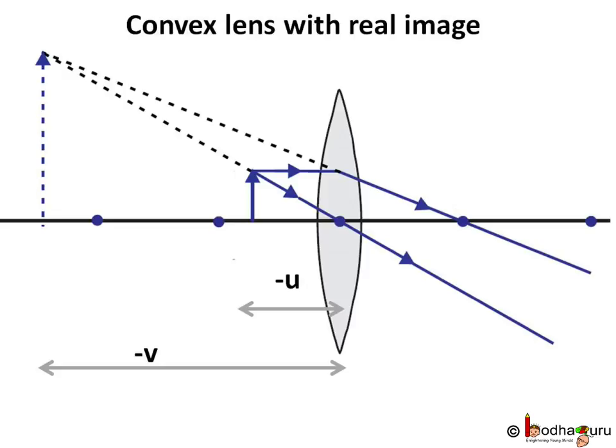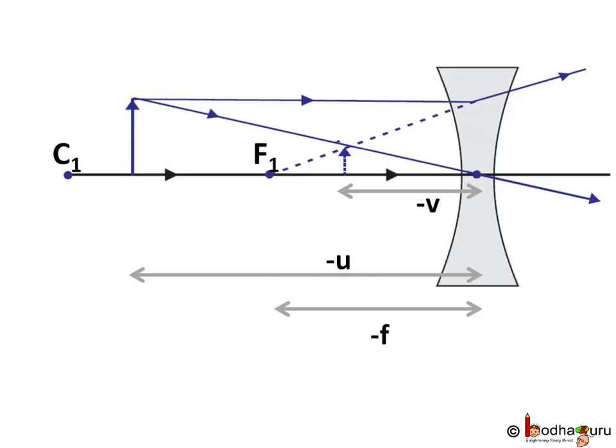And in case of concave lens, the virtual image formed is on the same side as the object. So here V, U, and F all will be negative. We will take some real life problems in the next lesson. Bye bye.